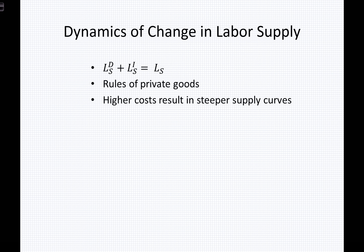As we think about the dynamics of changes in labor supply, we have to think about how we can add the labor supply of a domestic market to the labor supply of immigrant workers to end up with some labor supply equation for the entire market itself. We'll briefly consider the rules of private goods and how we aggregate private goods, then look at higher costs that result in steeper labor supply curves, and then look at the classic argument and updated argument.